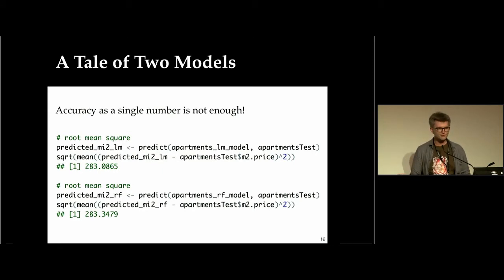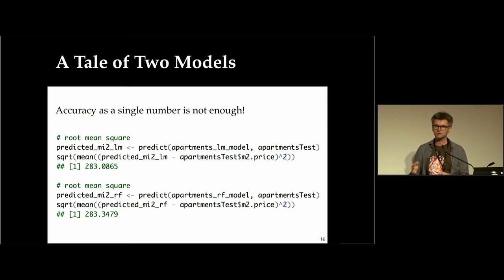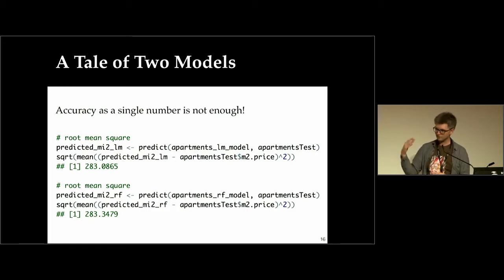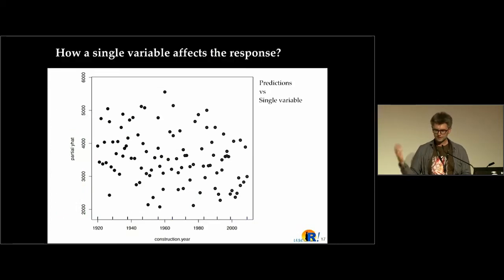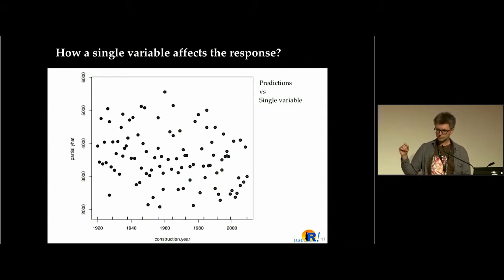Of course the question is: which one to choose? Some people say linear models are easier to implement, so they're better; others say random forest is more elastic. Actually, you can use DALEX to help choose. I'll show you the PDP plot — to explain how it works, I need to start with the individual conditional expectations plot.